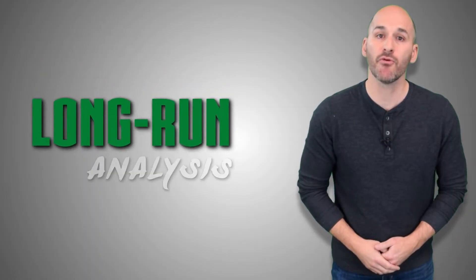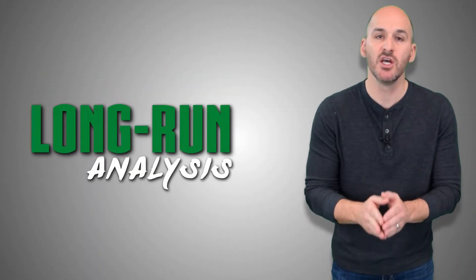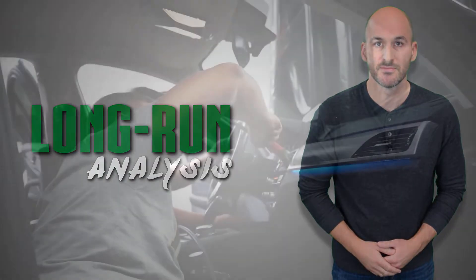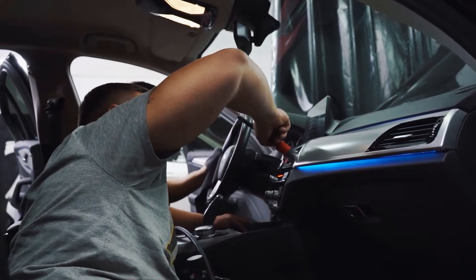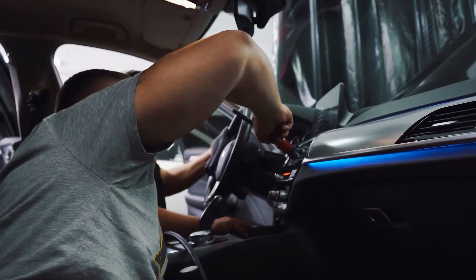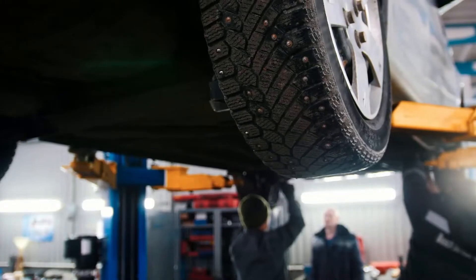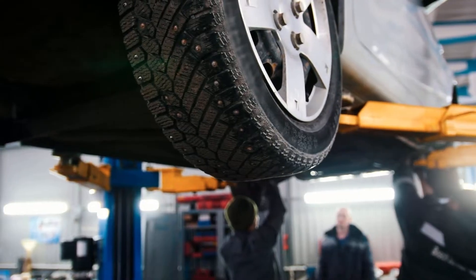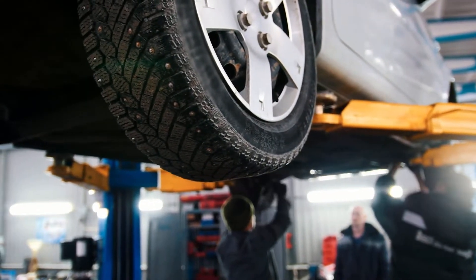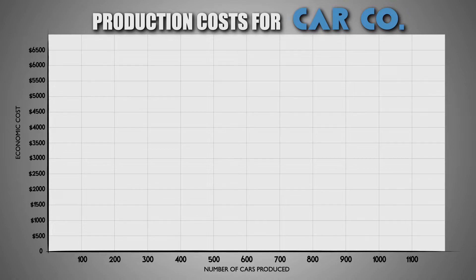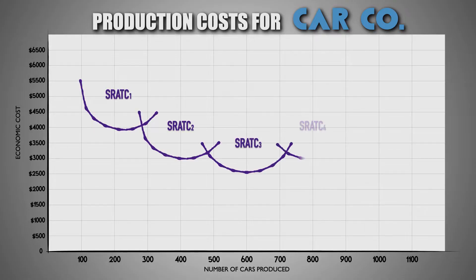Let's take a closer look at how a firm can use long-run analysis to determine an optimal plant capacity. Assume a major automobile manufacturer is trying to determine the optimal number of factories to operate in order to achieve productive efficiency and maximize profits in the long run. The firm needs to compare the total costs of producing cars at each potential plant capacity in the short run. Let's assume the firm has five potential plant capacities to choose from, and each of these short-run average total cost curves represents the total cost per car at each of these plant capacities.